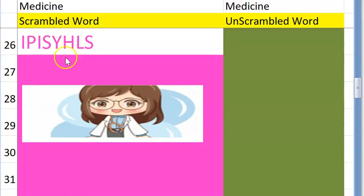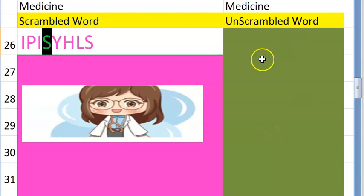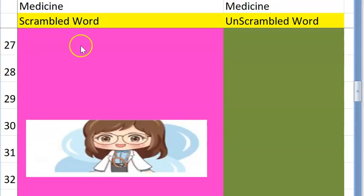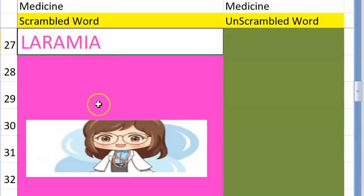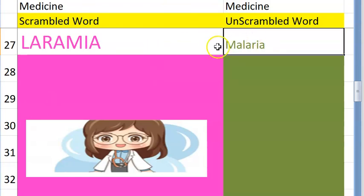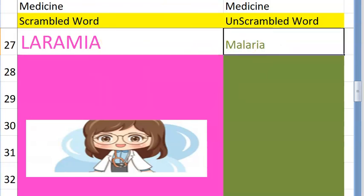The twenty-sixth one — starting with S — it's a disease caused by the bacteria Treponema pallidum, it is a sexually transmitted disease — syphilis. Very good! The twenty-seventh one is very easy — starts with an M, transmitted by mosquitoes, a protozoal disease caused by Plasmodium — it's malaria. Very good!